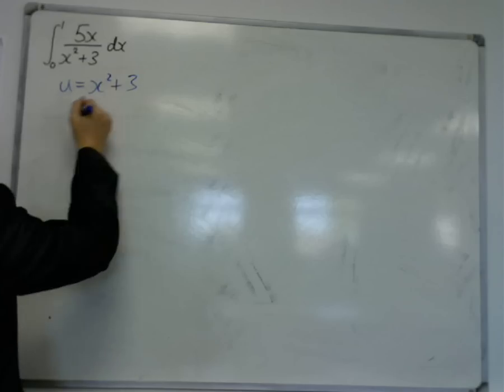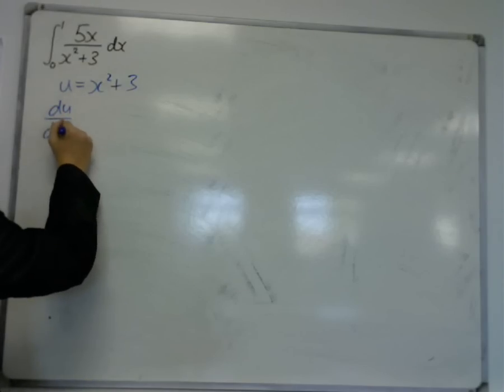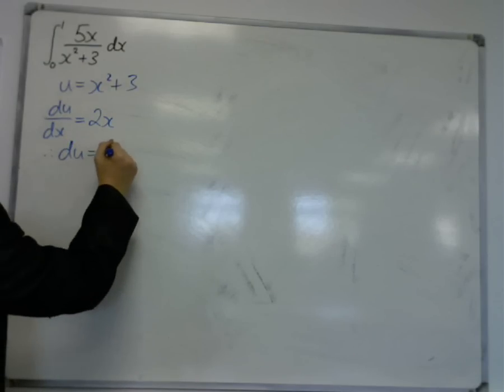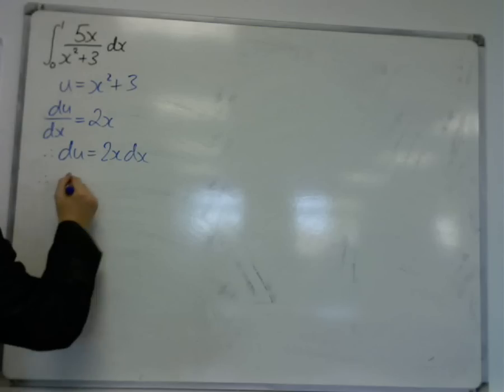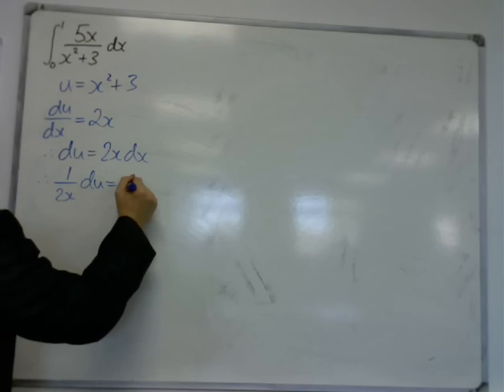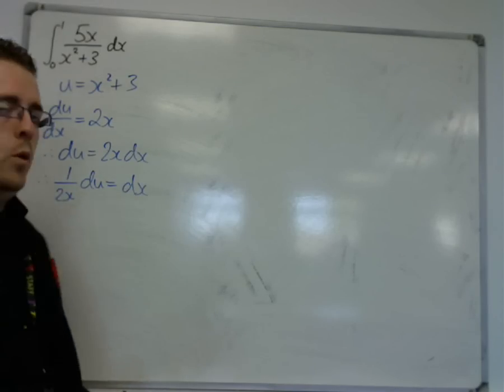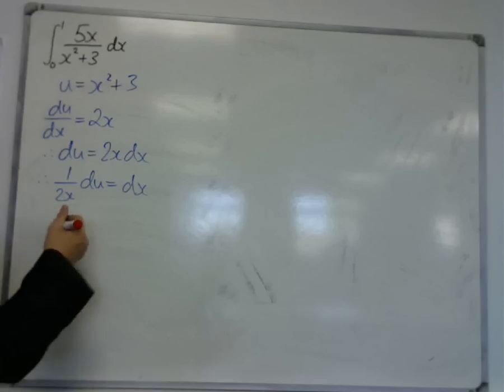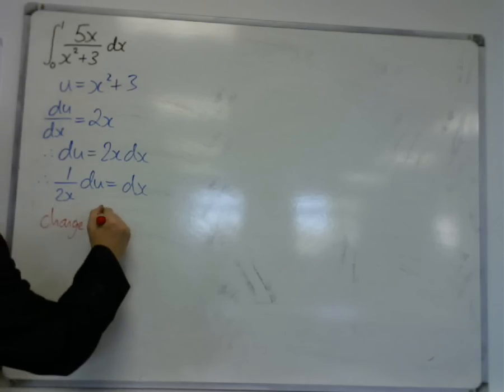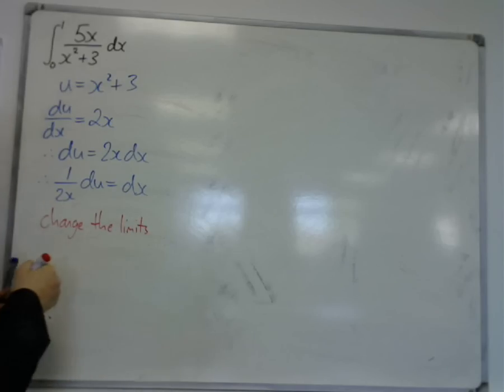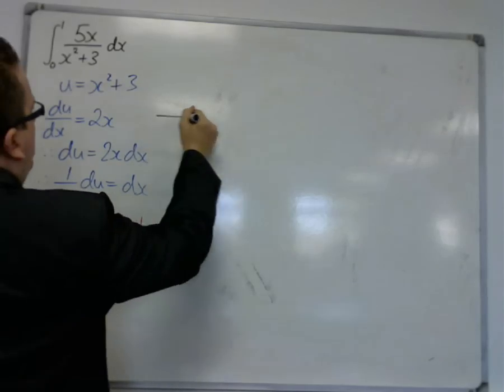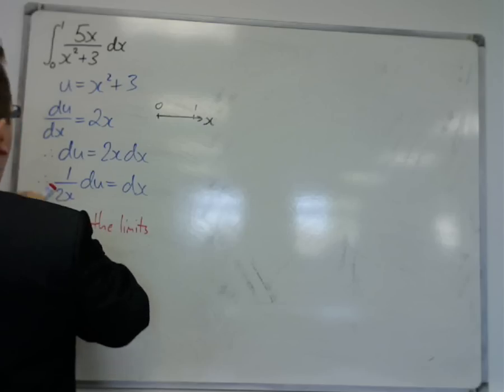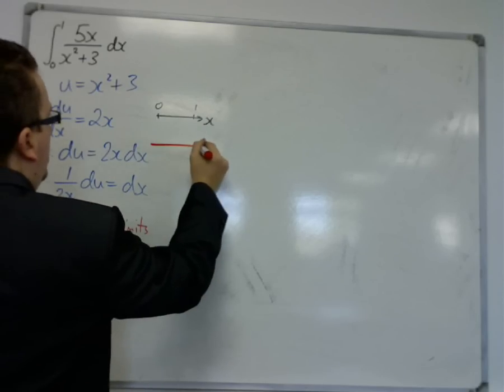So u, in this case, is x squared plus 3. So du by dx is 2x. So multiply both sides by dx. Divide both sides by 2x. So you should start to get quite quick at that process. Now we've got to change the limits.